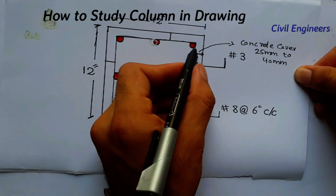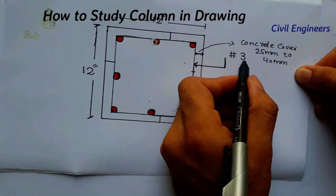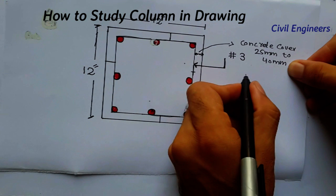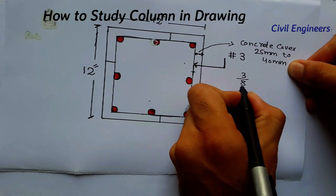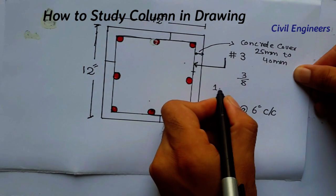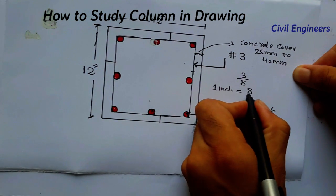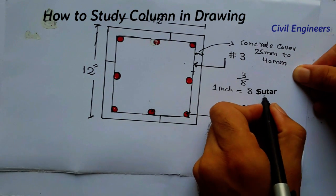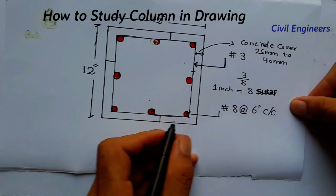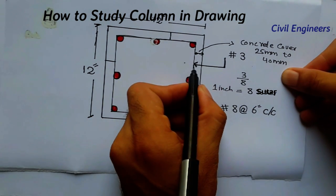The stirrup diameter is 3 sutras. In one inch we have 8 sutras, so 3 sutras equals 3/8 inch. So the diameter for the stirrup is 3/8 inch in this column.